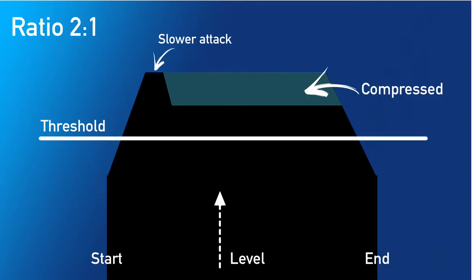When we talk about attack time on a compressor, we talk about the time it takes for the compressor to react after the signal has passed the threshold. A slower attack time will let more transients through. I have a ratio of four to one, the same threshold as before, and I will raise the attack time so you can hear how many transients we can let through.